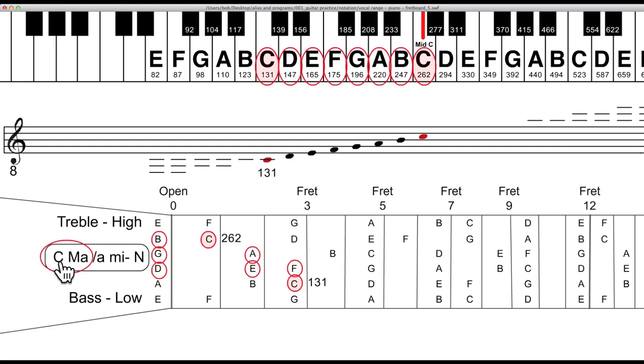Here's the C major scale starting at a frequency of 131 and going up to 262 cycles per second. That's one octave. Notice that's all the white keys of the piano. With two octaves it goes up to approximately 523 cycles per second. Again, all the white keys.